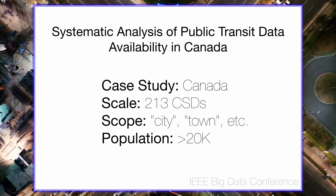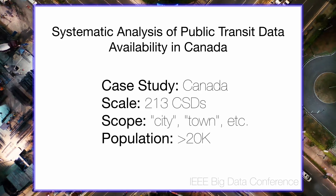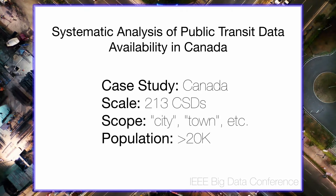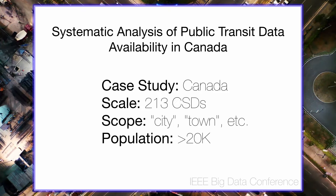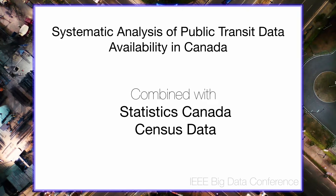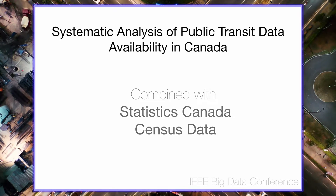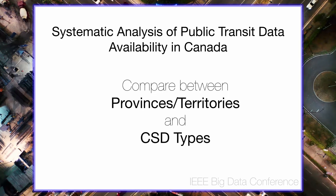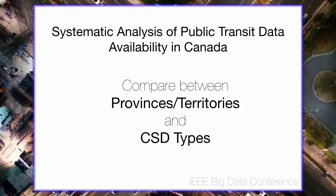Using Canada as a case study, we collected GTFS data for the 213 Candidate Census Subdivisions, or CSDs, which represent things like cities, towns, and municipalities, and we look at those CSDs with populations greater than 20,000. These data were then cleaned and leveraged along with CSD-specific census statistics to comprehensively compare public transit offerings between both provinces and territories and across CSD types.